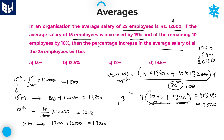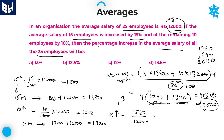The question asks for the percentage increase in the average salary of all 25 employees. The initial average of 25 employees is 12,000 and the new average is 13,560. Therefore, percentage increment is equal to the difference, which is 1,560, divided by the original value 12,000, into 100. Cancelling zeros gives 156 by 12, which is equal to 13 percentage. Option A is the right answer for this question.